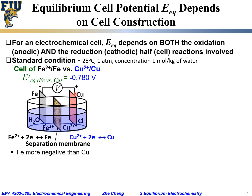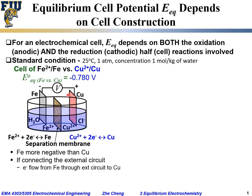If we replace the infinite resistance voltmeter with a finite resistance connecting the two electrodes, naturally — as learned from physics — electrons will flow from the more negative electrode, which is iron, through the external circuit into the more positive side, which is the copper electrode.